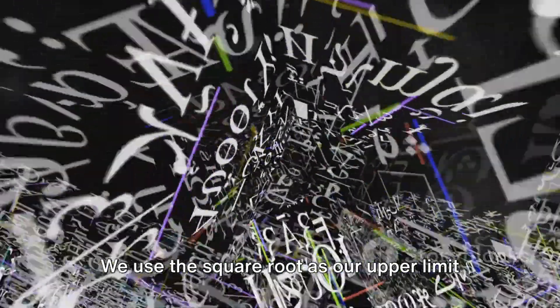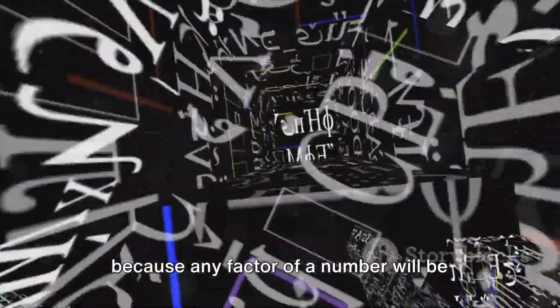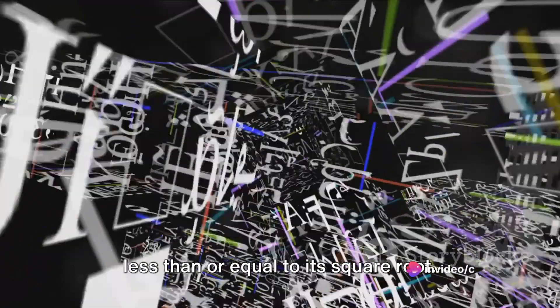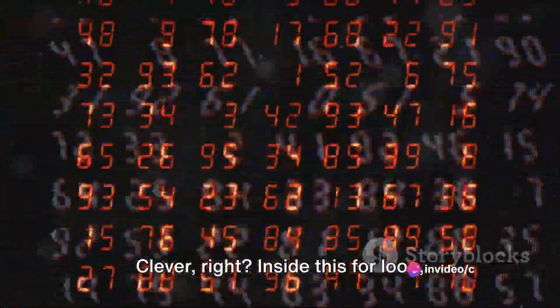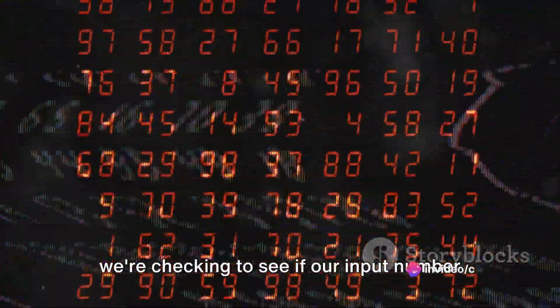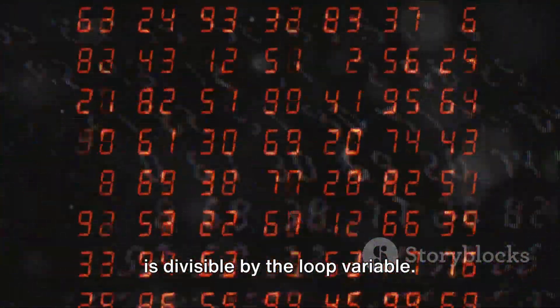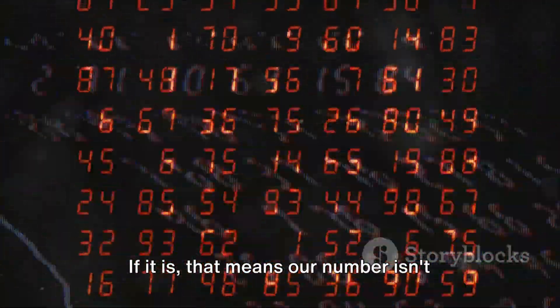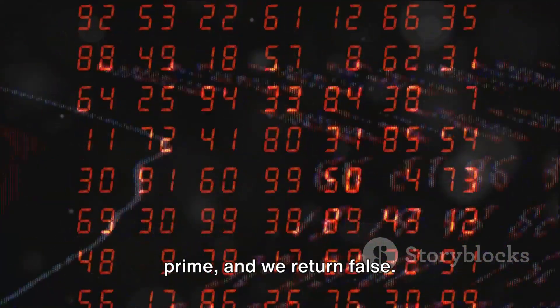We use the square root as our upper limit because any factor of a number will be less than or equal to its square root. Clever, right? Inside this for loop, we're checking to see if our input number is divisible by the loop variable. If it is, that means our number isn't prime and we return false.